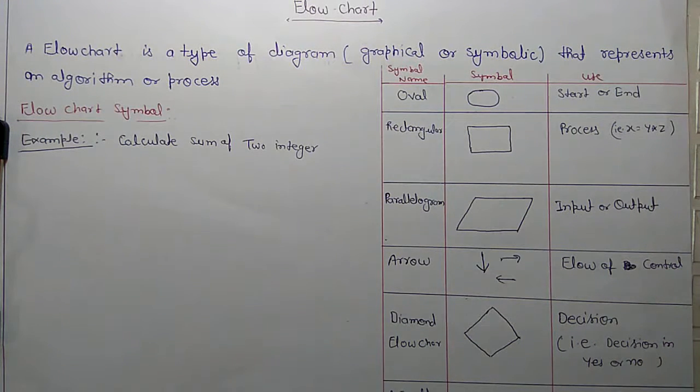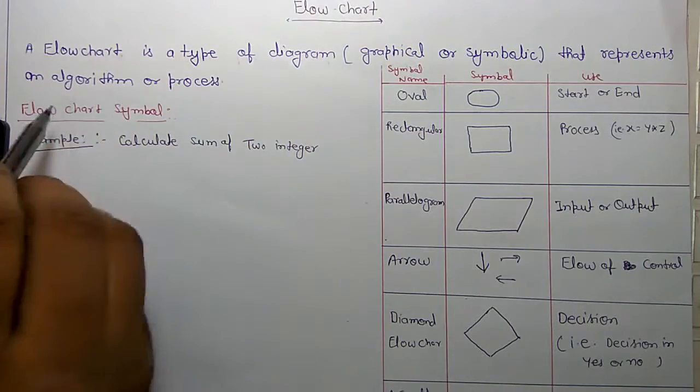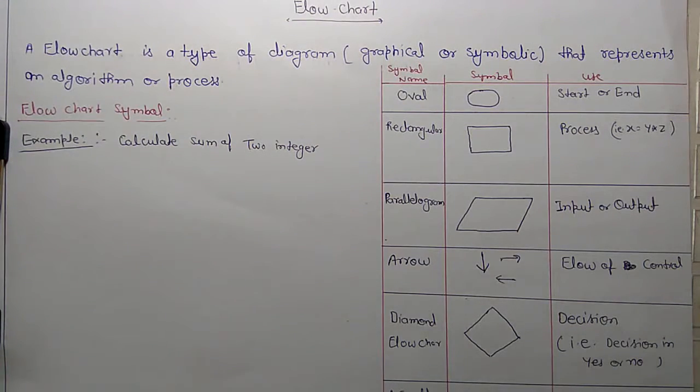Hi, today we are going to learn flowchart. Flowchart is a type of diagram, graphical or symbolic, that represents an algorithm or process. Through the diagram we create an algorithm. The simple meaning is this.